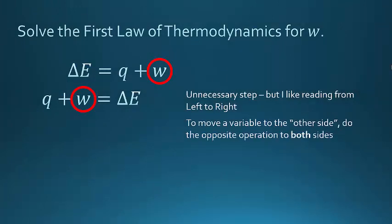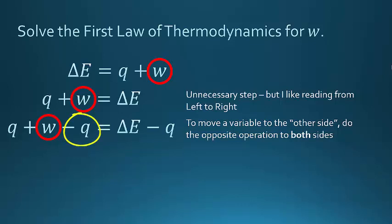Now, what do we do? Well, I want the W by itself, so I need to get rid of the Q. In order to move a variable from one side of the equal sign to the other, we need to do the opposite operation to both sides. To get rid of the Q, I'm going to subtract Q, because I know that Q minus Q is just equal to zero. But if I subtract Q from the left-hand side, I need to make sure I subtract from the right-hand side. And then I get my final equation, W equals delta E minus Q.